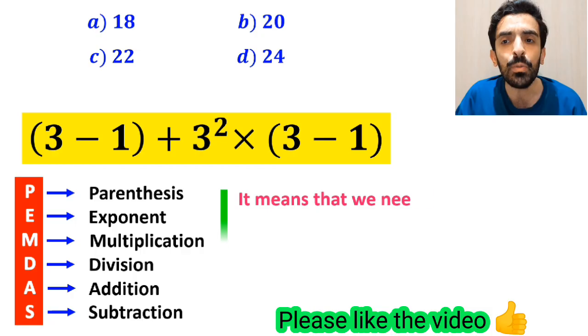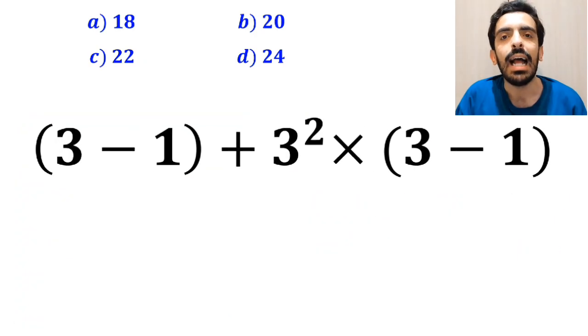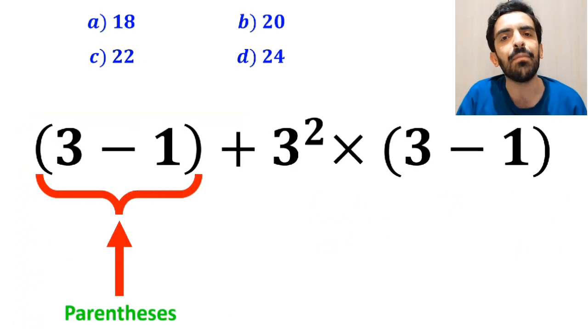It means that we need to perform all the operations exactly in order from top to bottom according to the PEMDAS rule. As you can see on the screen, in this expression,